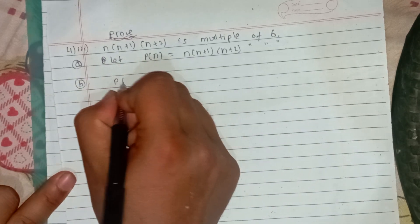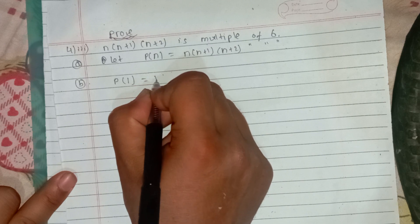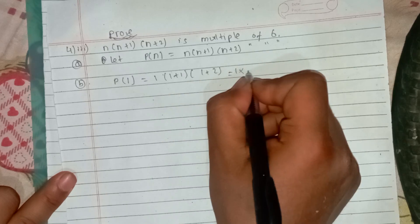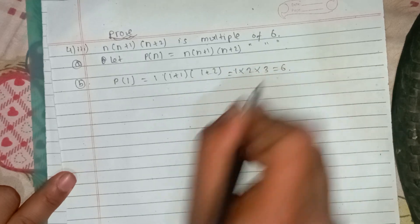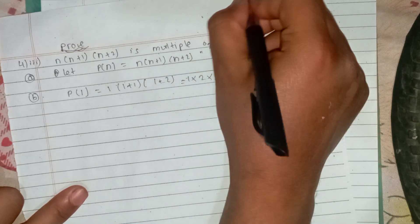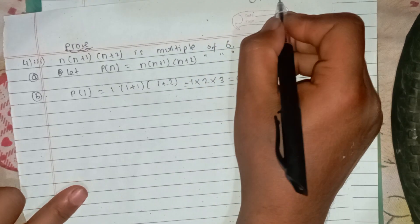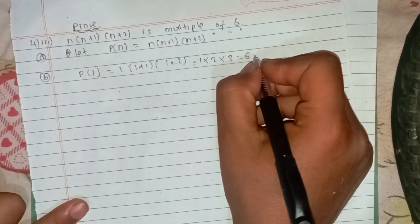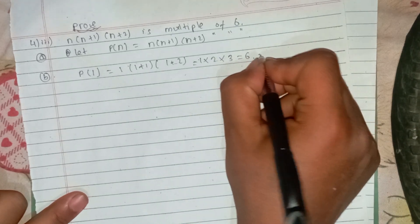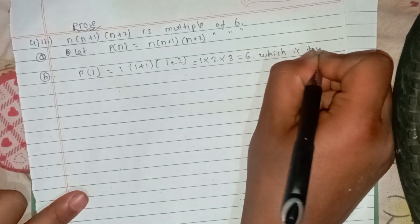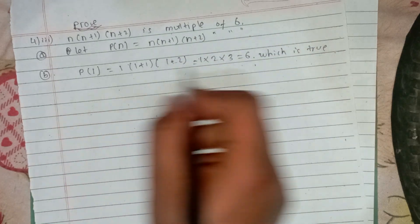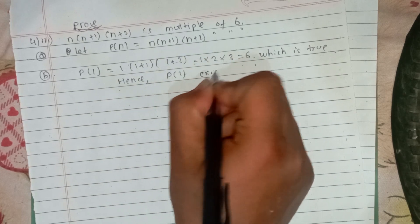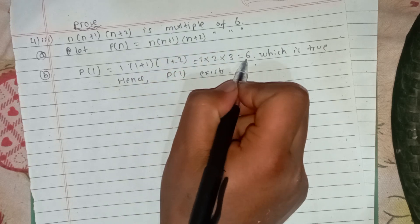The second step is to show P(1) exists. For P(1), substituting n equals 1: 1 into 2 into 3 equals 6, which equals 6 into 1, so it is 6. This is true, which means P(1) exists.